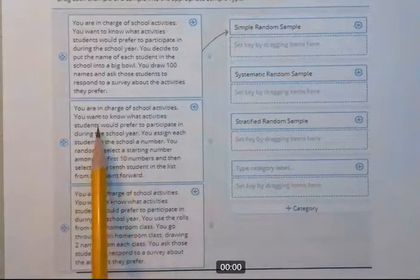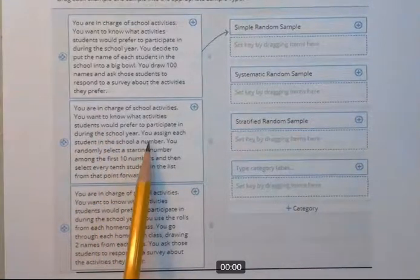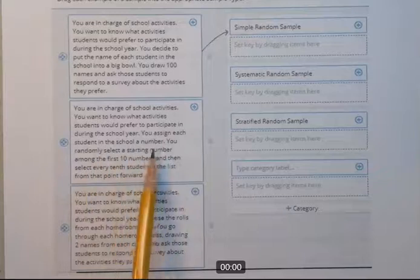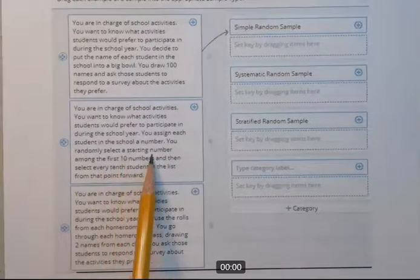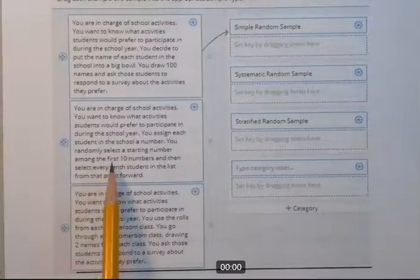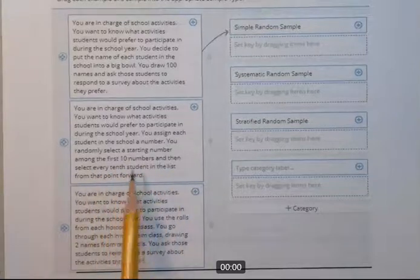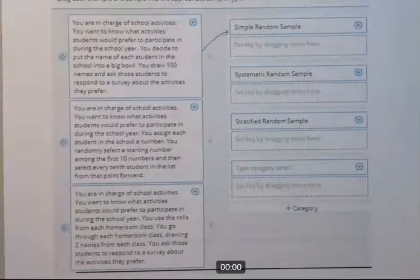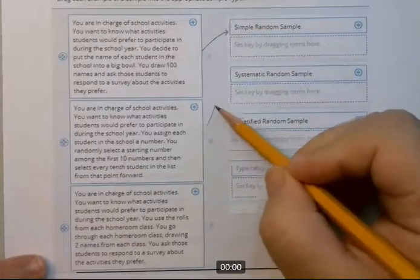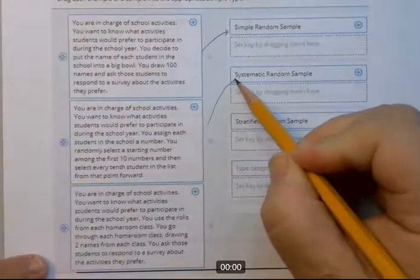Okay next, same set, you're in charge of school activities. So you assign each student in the school a number. You randomly select a starting number among the first ten numbers and then select every tenth student. So you're introducing some kind of a systematic way of choosing the students. It's not totally random. So that would be a systematic random sample.